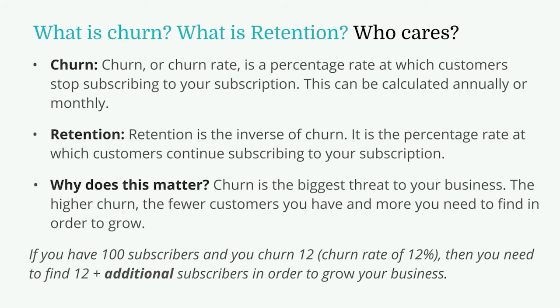So what is churn and what is retention? Churn is the amount of customers that cancel or leave each month — that's how we measure it in monthly subscription businesses. Retention is the exact opposite: the amount of people you're holding onto every month. Churn and retention are usually calculated as percentage rates. For example, if you have 100 subscribers and 12 cancel, you have a churn rate of 12% — the number who canceled divided by total subscribers.